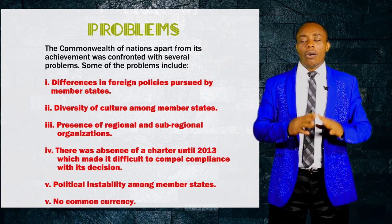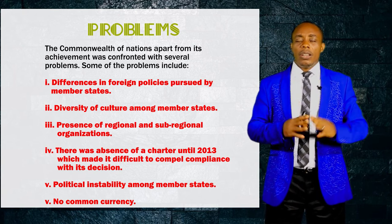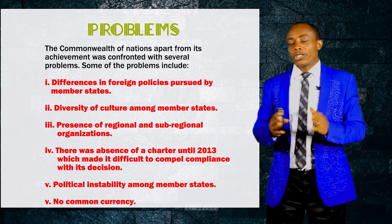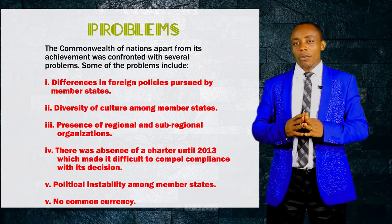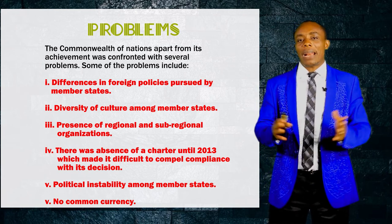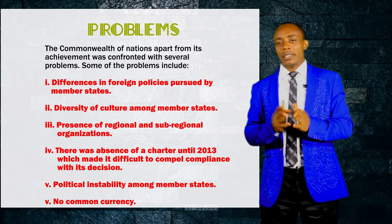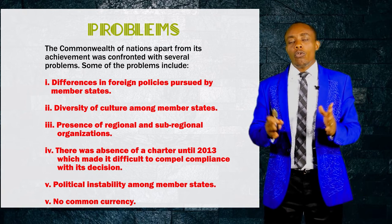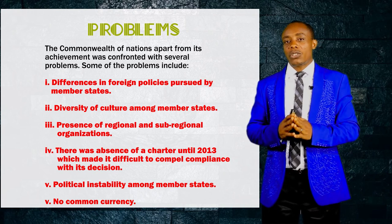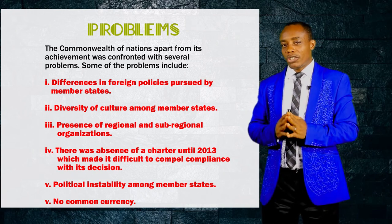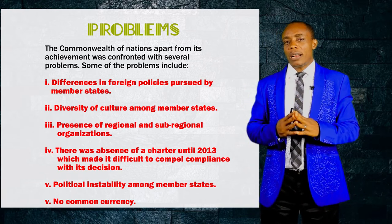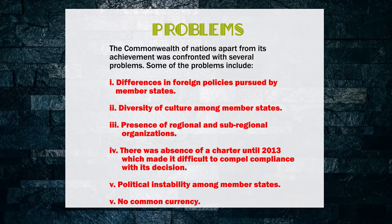Another problem is the absence of a charter until the year 2013. The Commonwealth of Nations before this time had no charter or constitution. It was not until 2013 that a charter was prepared. And so it had been difficult for the organization to compel compliance to its decisions on member states. Member states were doing whatever they liked because there was no constitution to compel them to obey the decisions of the organization. But by this charter, every member state is now compelled to work in accordance with the charter or forfeit membership.